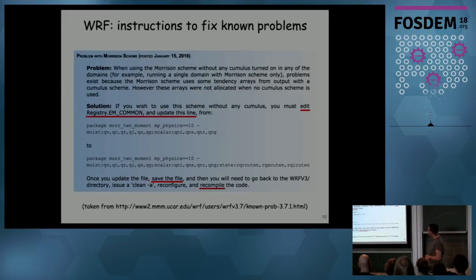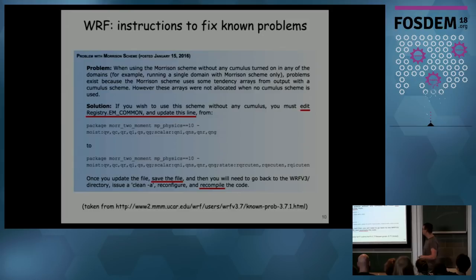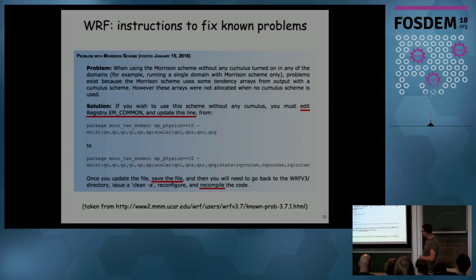Another example: WRF, the weather modeling and climate research software. It's used on the biggest supercomputers in the world — it's one of the top five applications on the Blue Waters system. They have a website and they still do this: they have versions, they have bug fix versions that they release, and then they have a 'known bugs' web page that says: 'Go to this file, it has this in the file, it should be this — please fix it, save the file, and recompile the code.' The URL is there, you can check it.